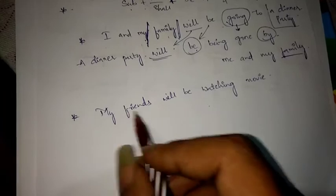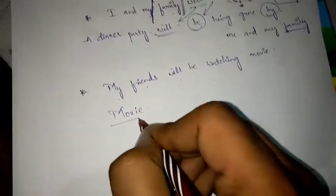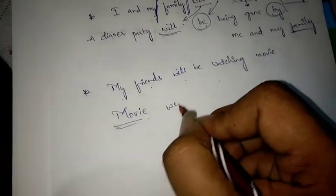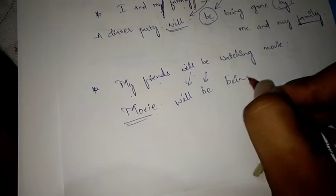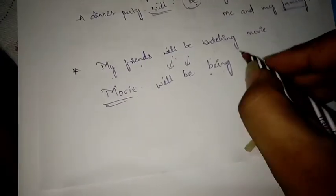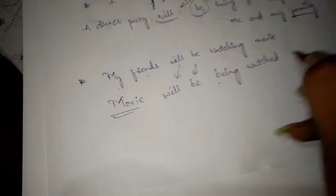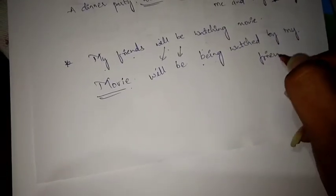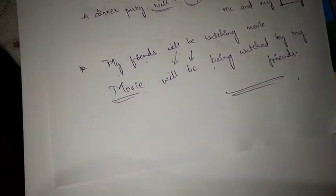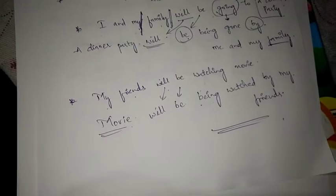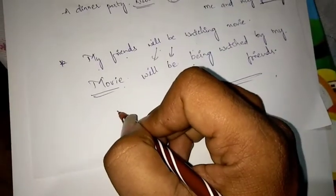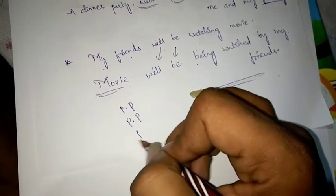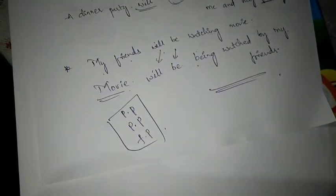Next: 'My friends will be watching movie.' Movie is the object, so it becomes the subject. Converting V4 into V3 using 'being': 'Movie will be being watched by my friends.' That is enough for today. In tomorrow's class we will continue with present perfect, past perfect, and future perfect. Hope you liked the video.